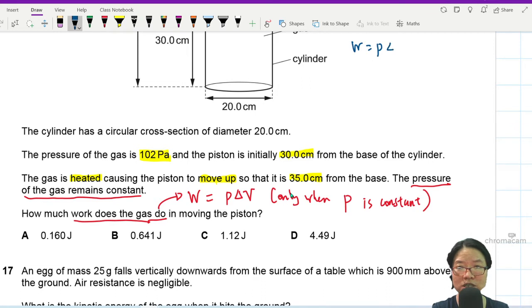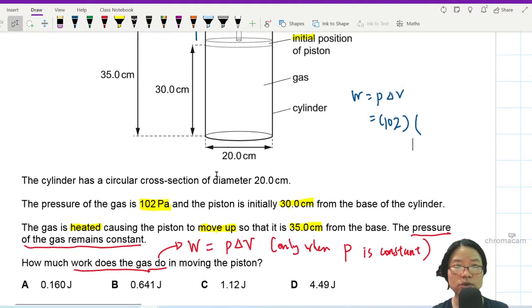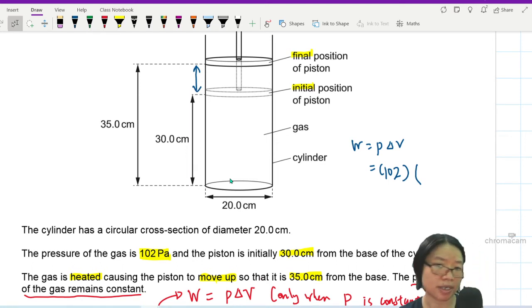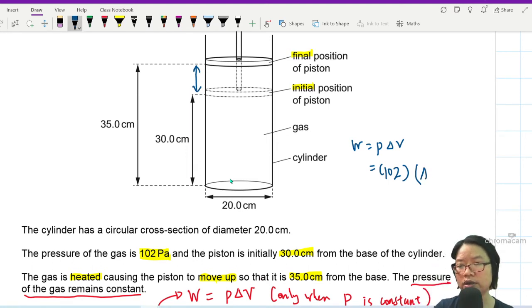All right, so W is equal to P change in volume. We know the pressure of gas 102 Pascal. Make sure everything is SI. Change in volume is what? Well, let's look at this. This is my change in length, and I need to multiply by the area. So I will take area, multiply by the change in length.